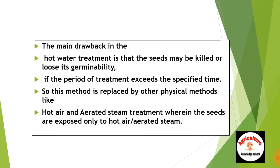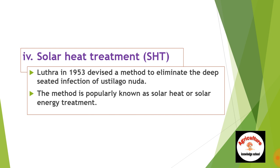A disadvantage of hot water treatment is that the seeds may be killed or lose their germinability if the period of treatment exceeds the specified time. So this method is replaced by other physical methods like hot air and aerated steam treatment, wherein the seeds are exposed only to hot air and aerated steam. If temperature exceeds 52 to 70 degrees Celsius, the embryo can be damaged.